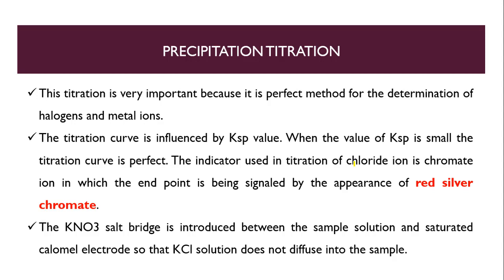The next type is precipitation titration. In this titration we can directly see the change because there is a precipitation and a color change — both will be there, so we can see the result within a second. It is a very important method because it is a perfect method for determination of halogens and metal ions, as it is a precipitation titration method.